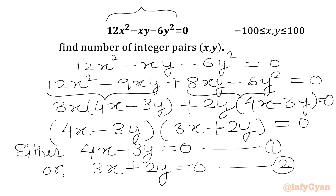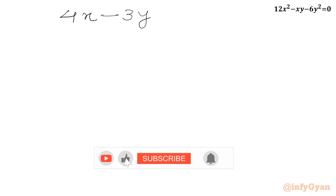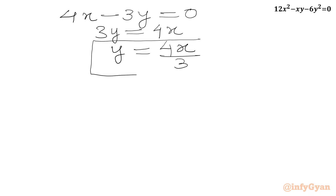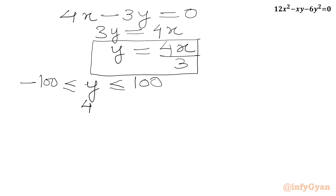Let me write equation 1 first: 4x minus 3y equals 0. From this equation, 3y equals 4x, so y equals 4x divided by 3. Now it is given that y is greater than or equal to minus 100 and less than or equal to 100. Substituting, we write: minus 100 ≤ 4x/3 ≤ 100.